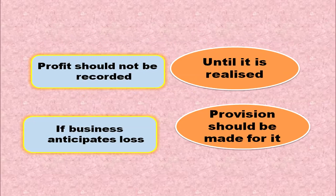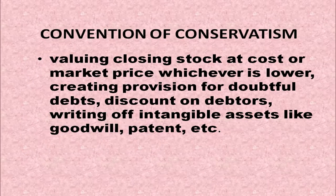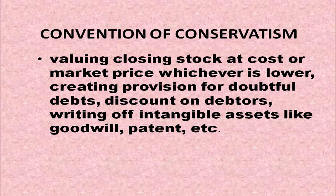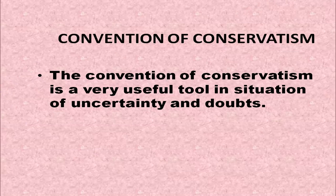Profit should not be recorded until it is realized. If a business anticipates loss, provision should be made for it. Valuing closing stock at cost or market price, whichever is lower, is done on the basis of Convention of Conservatism. This is also why we create provision for doubtful debts, provide discount on debtors, and write off intangible assets. The Convention of Conservatism is a useful tool in situations of uncertainty and doubt.